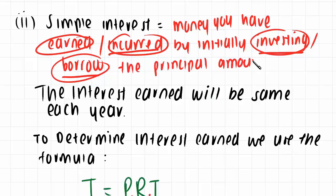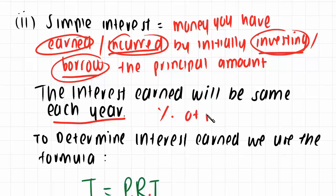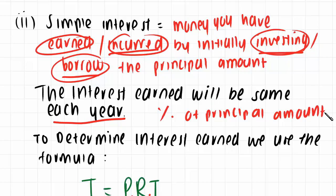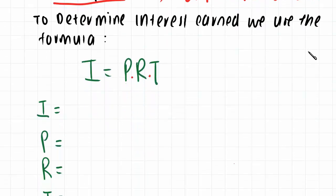Simple interest is calculated by determining a set proportion of the principal amount that needs to be paid every single period. The interest earned will be the same each year for simple interest — it is just a fixed percentage of the principal amount that does not change every year.